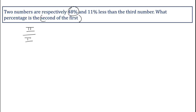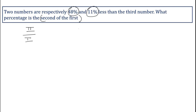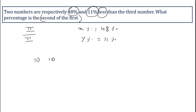The two given numbers are 48 percent and 11 percent. That is, x percent equals 48 percent — the first number — and y percent equals 11 percent — the second number. These two numbers are less than the third number, so we'll use the formula: (100 minus y) upon (100 minus x) into 100 percent.